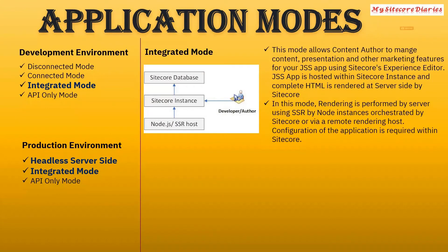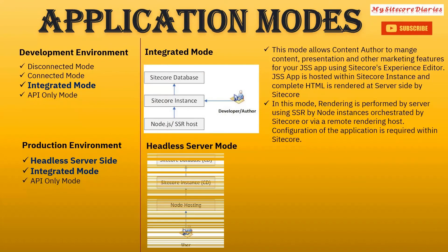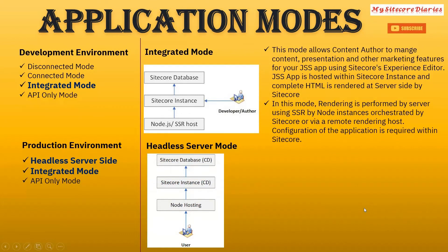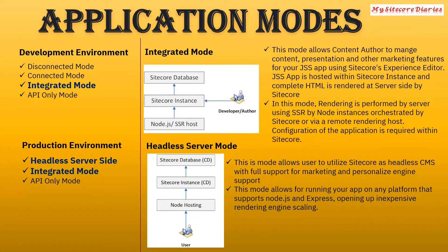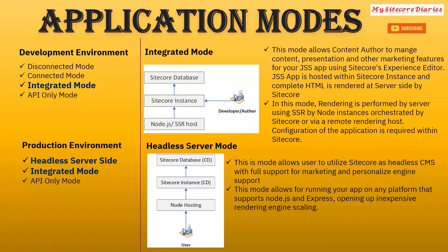Headless server mode — you can say this is truly headless CMS. This mode is used to utilize Sitecore headless CMS with full support for marketing and personalization features. This mode allows for running your app where the headless rendering engine supports expensive rendering and scaling. The app is hosted separately — it can be hosted separately and it doesn't matter for the disconnected scenario. This mode is not generally useful in production environment — you will still need the CMS for authors.